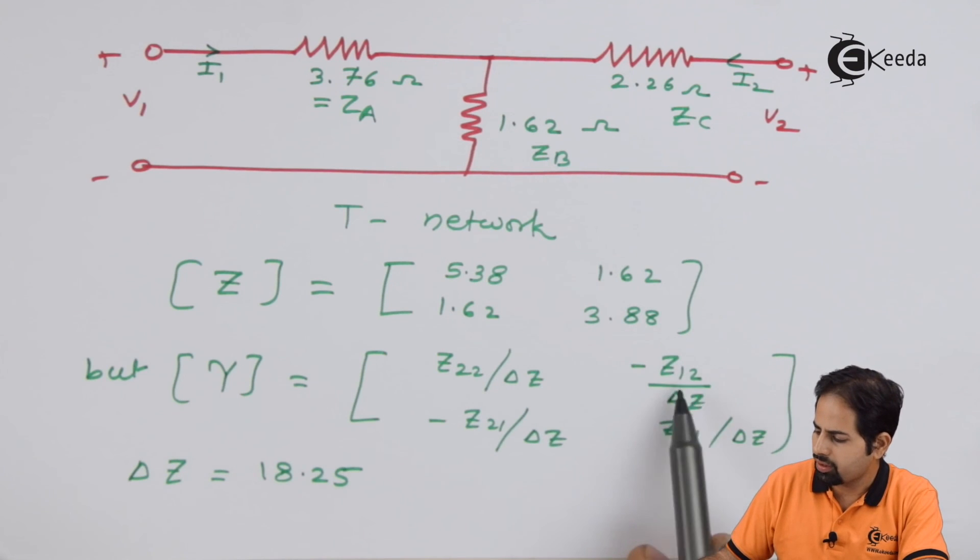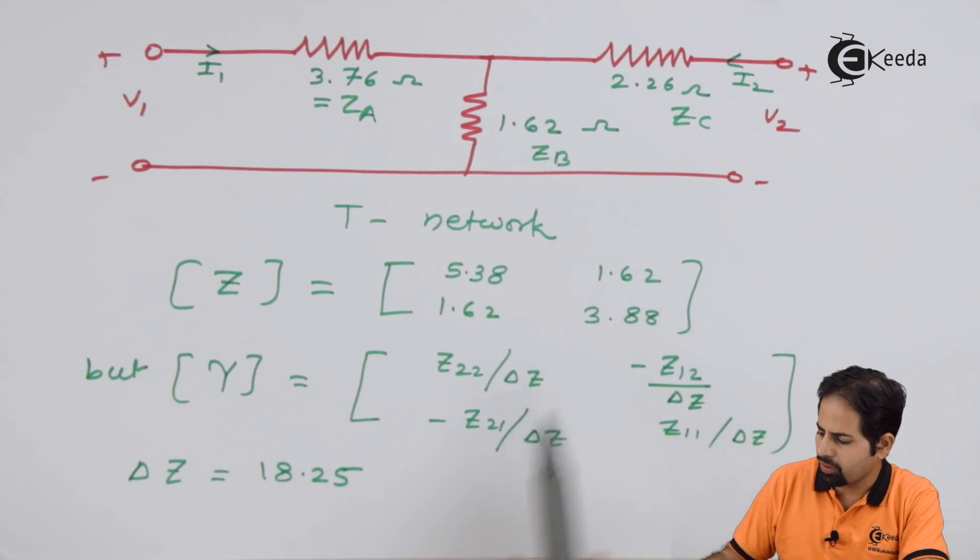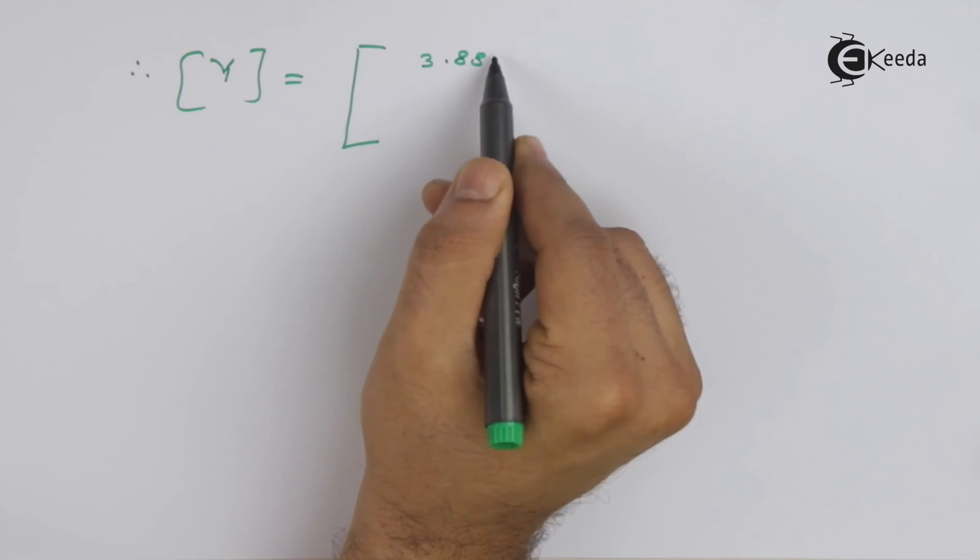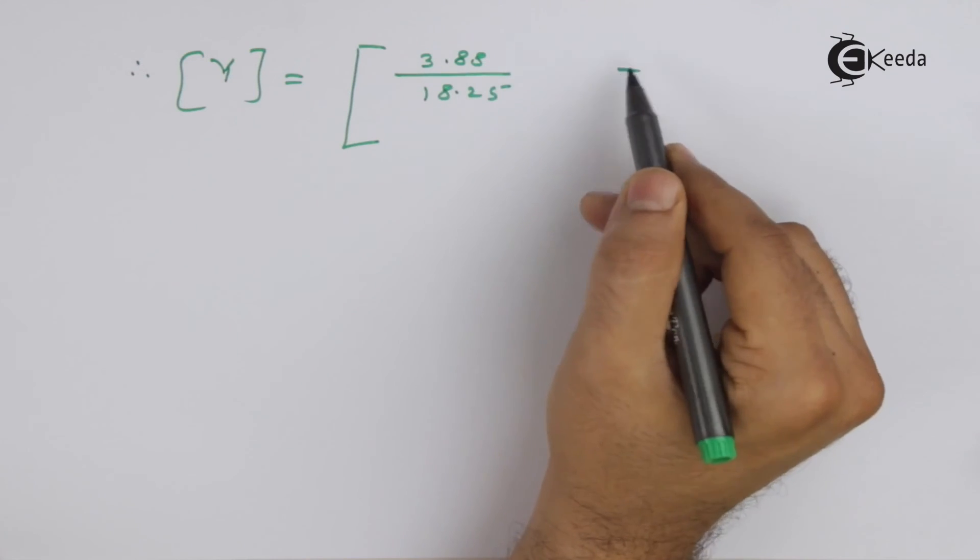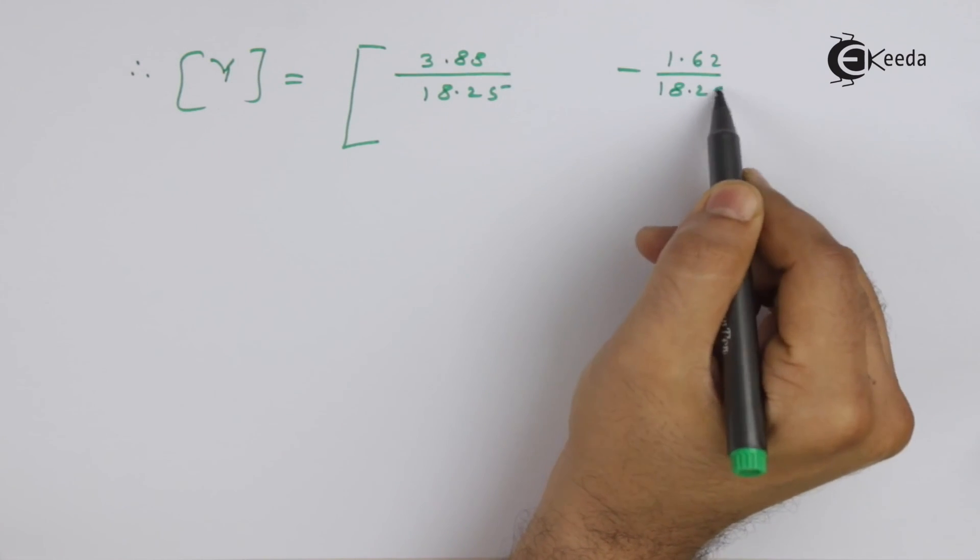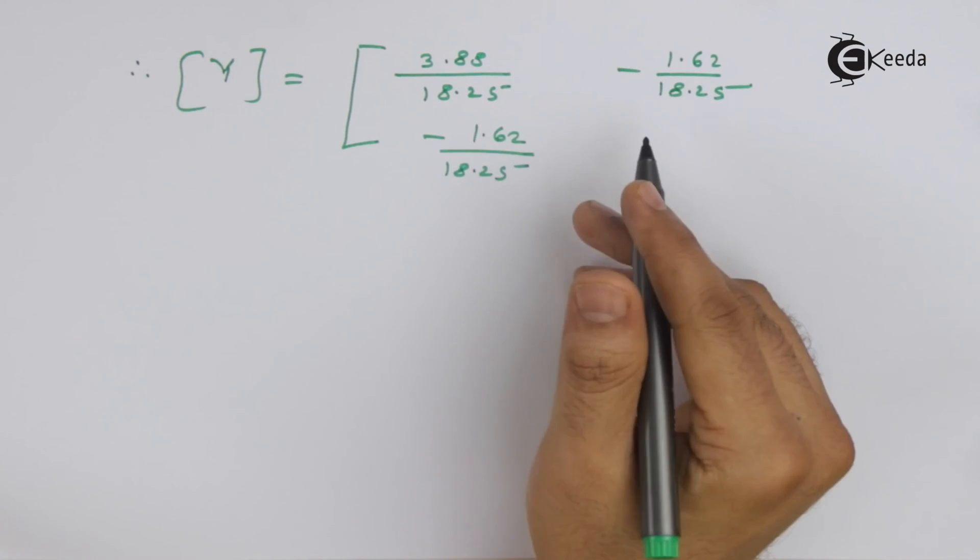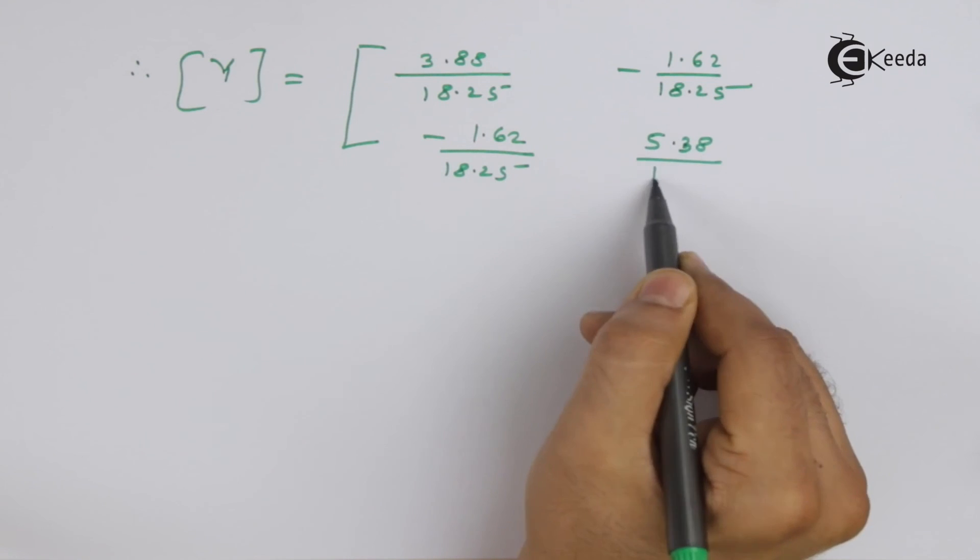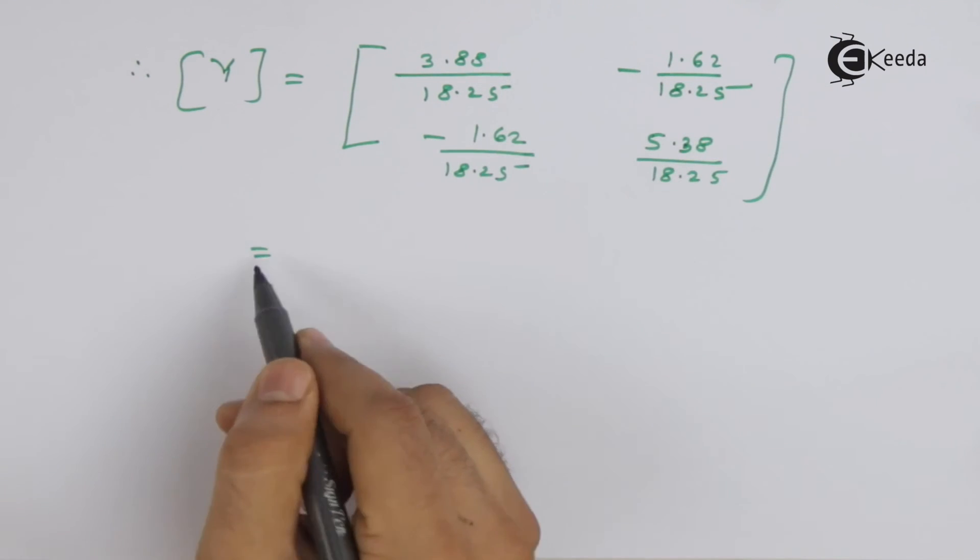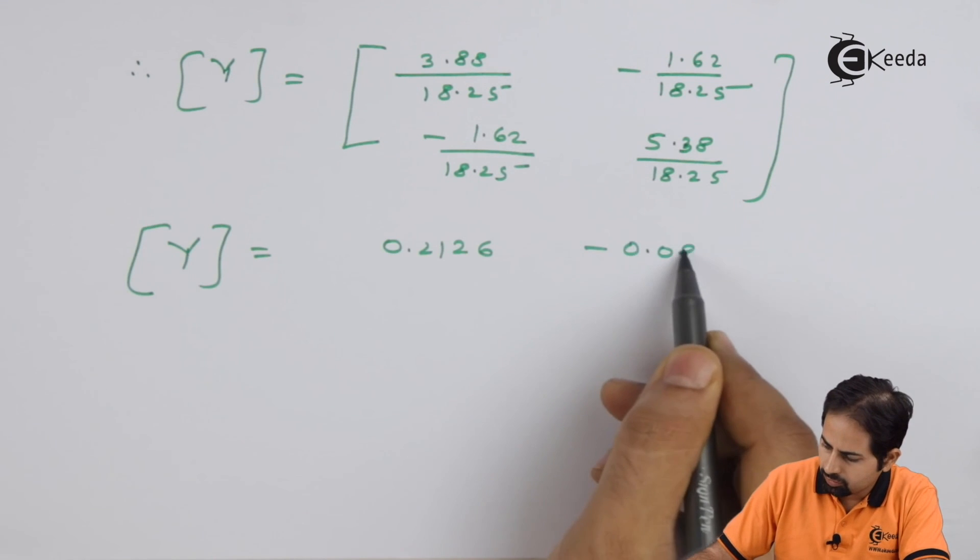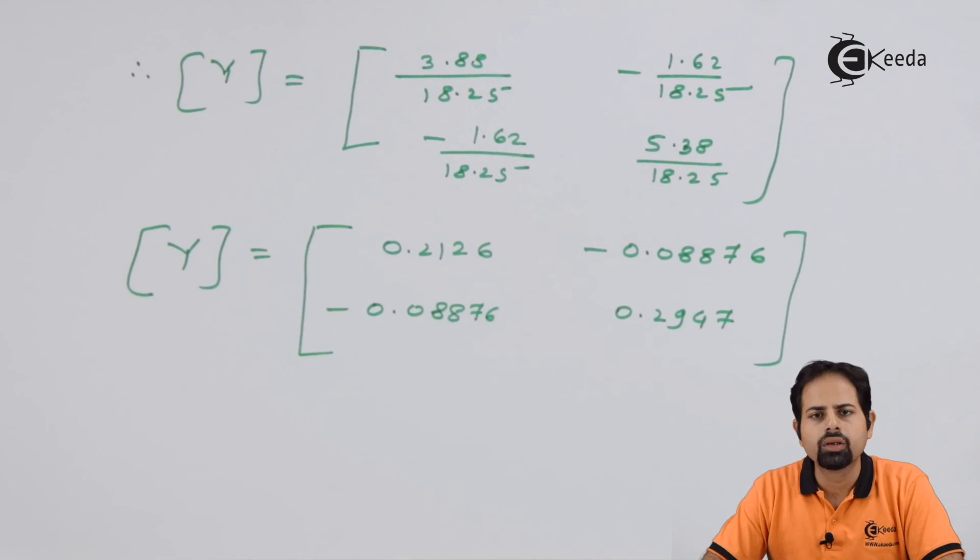We know what is Z22, it is 3.88, Z12 is 1.62 and so on. And once we solve it further, what we get is the final Y matrix. So this is the matrix that we have obtained and it is a Y matrix and which is the required answer. So that is the end of this question.